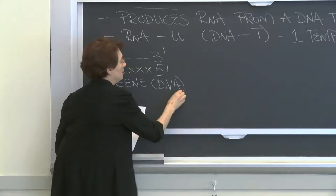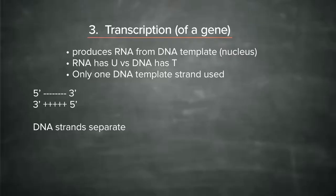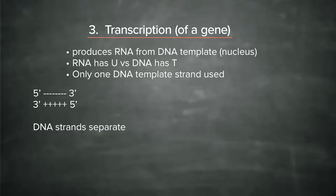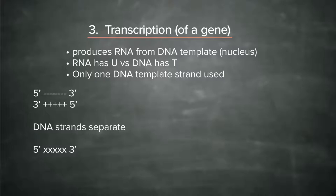as before, for DNA replication, the strands are going to separate. Here they are, 5 prime to 3 prime, and 3 prime to 5 prime.